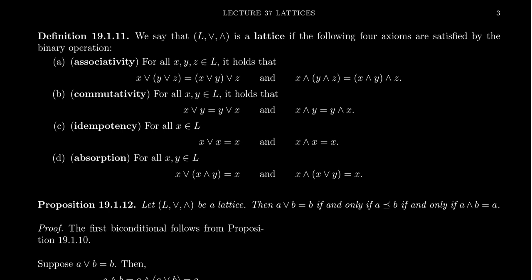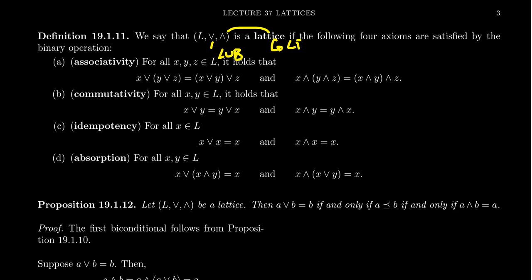So a lattice will be a set L equipped with two operations. The first operation we call the join operation, and the second one we call the meet. Based upon the previous lecture with semi-lattices and their natural correspondence with a partially ordered set, we can refer to the join as the least upper bound operator, and the meet as the greatest lower bound operator, thinking in terms of the partial order.